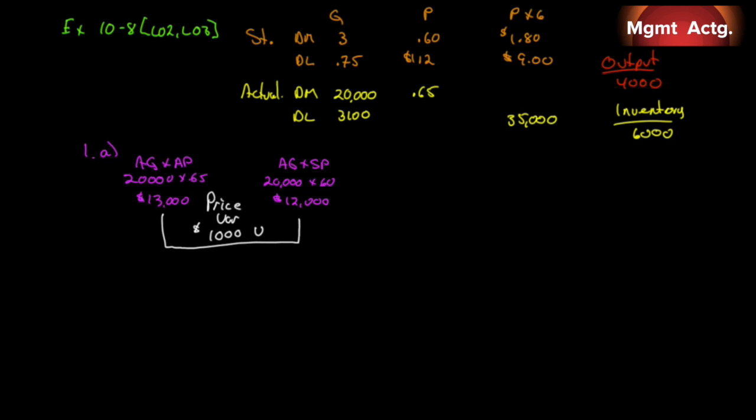Now what we want to do is look at our quantity variance. So we're going to compare our actual quantity at standard price with what a standard quantity would have been at the standard price. Well, the standard quantity is 3 per unit of output. Our output was 4,000. So we should have used 3 times 4,000 and we should have paid $0.60 for each of those, so $7,200. Now, here's the issue. This is our price variance, so we have to do it based on our purchase level. This is our production comparison, and we have to do it based on what we produced. We didn't use 20,000 units to make 4,000 output. We had an inventory of 6,000, so we only used 14,000. So we have to recalculate. We actually used 14,000 times our standard cost, so we get $8,400.